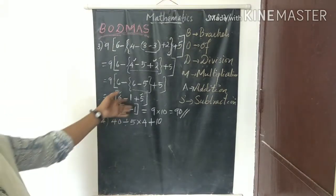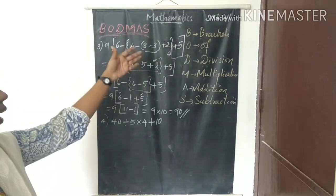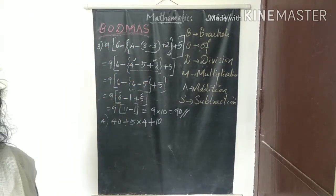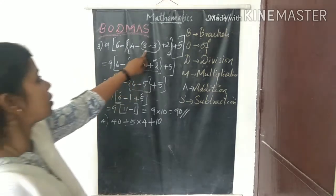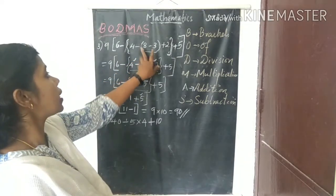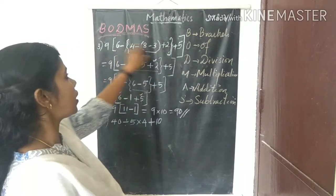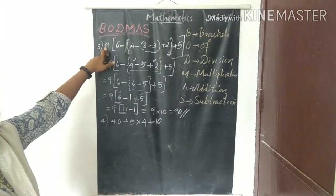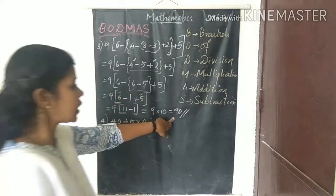To recap this problem: first we opened the simple bracket, then the curly bracket, then the square bracket, and last we did the multiplication. Answer is 90.